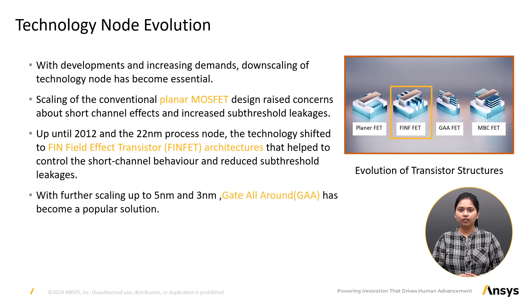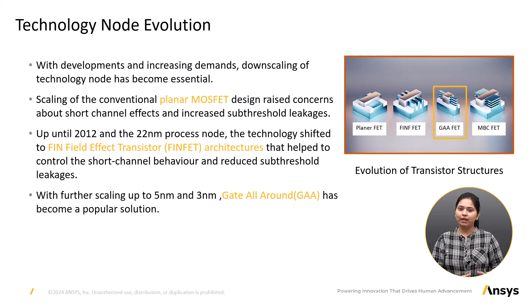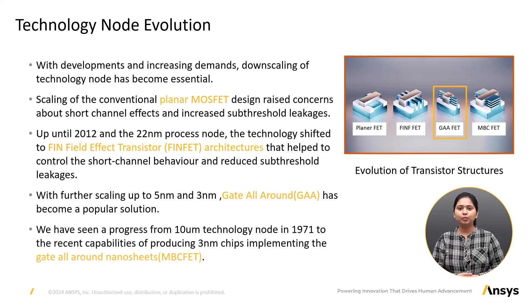With further scaling to 5 nanometer and 3 nanometer, FinFETs are also facing challenges, which leads to an evolutionary development from FinFET to gate all-around field effect transistors. Gate all-around FETs use vertically stacked nanosheets offering a gate on all sides of the channel, allowing high drive current, better speed, and reduced leakage. This technology can be scaled to fit specific performance requirements by adding sheets vertically, unlike FinFETs which require numerous fins added laterally — so no additional area is required for improved speed. There has been progress from 10 micrometer technology nodes in 1971 to the recent 3 nanometer chips implementing gate all-around nanosheet MBC FETs.